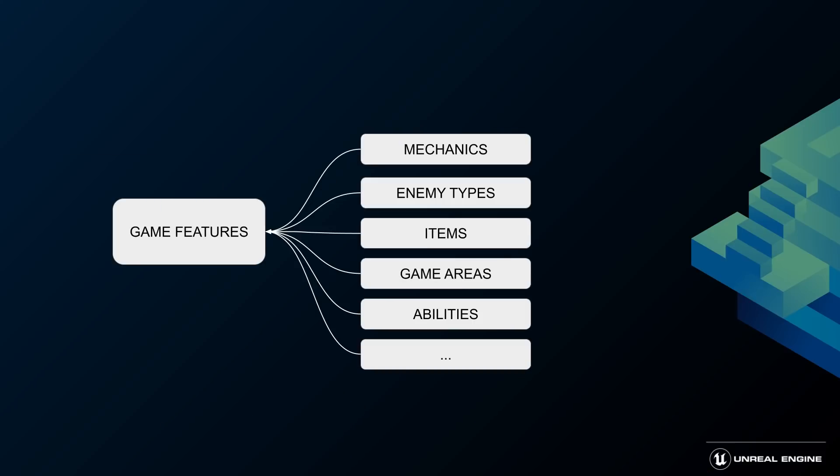Game features can be virtually anything: new mechanics, weapons, skins, UI elements, or even new areas on the map. The game should not be aware of the implementation of our game feature, and none of the feature's content should be referenced by any other part of the game or any other plugin. It means that the game doesn't rely on the feature, which allows you to turn features on and off without breaking the game at any point.